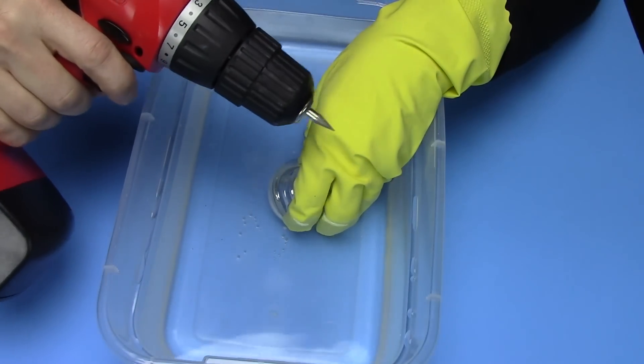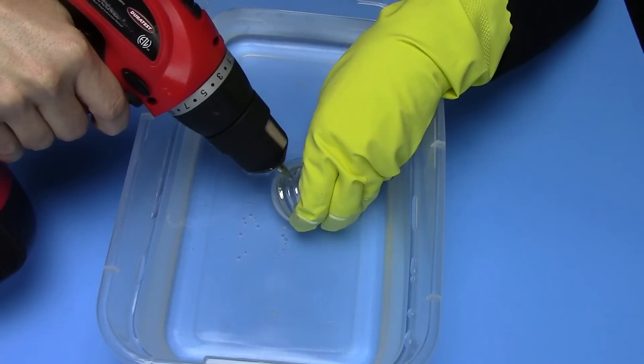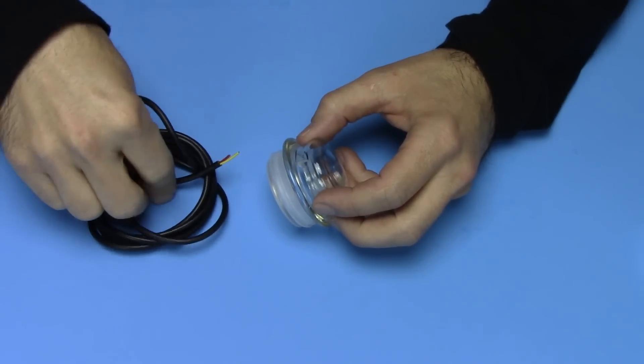Now take your diamond drill bit with your cordless drill and submerge your lid into the water and slowly start to drill your hole. Now that your hole is drilled, go ahead and take your wire.